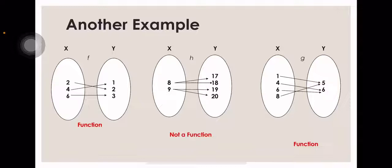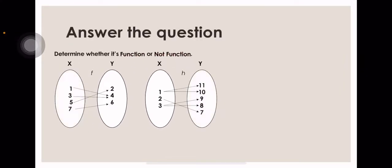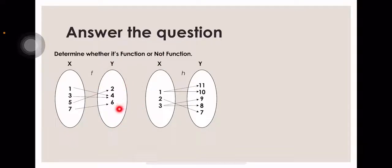Now let's try to answer a question. Determine whether the diagram represents a function or not. The set X has values 1, 6, 5, and 7. The set Y has values 2, 4, and 6. As I said, when it is many-to-1 this is a function, because you can see the Y values repeat but each X value maps to only one Y value — so this is many-to-1.